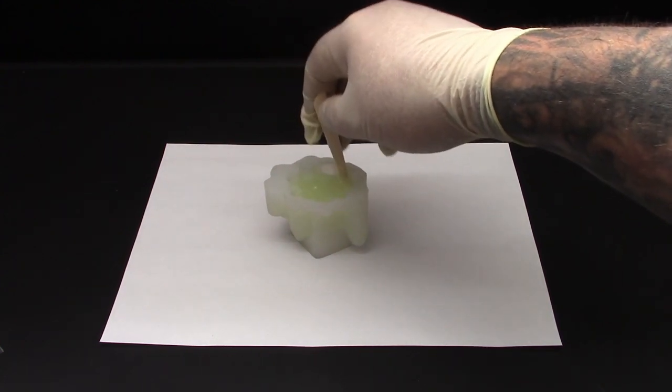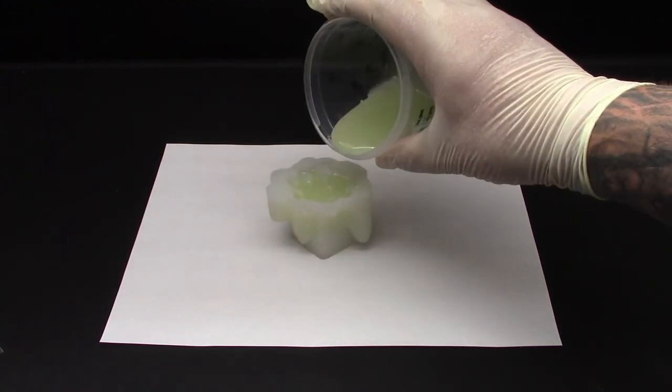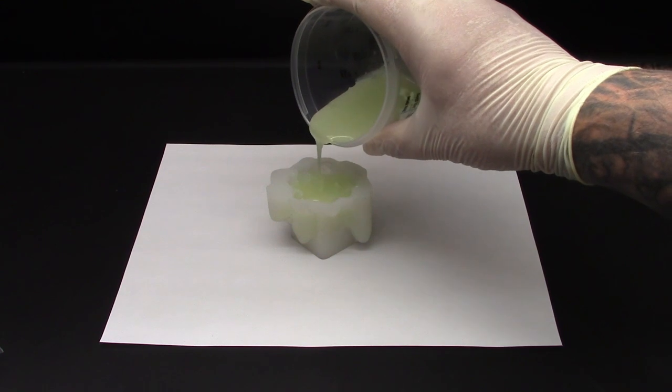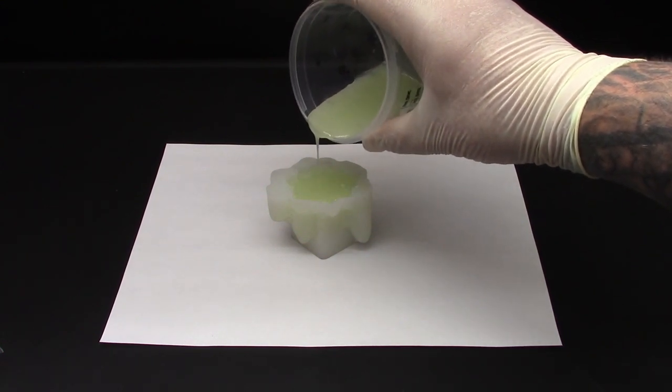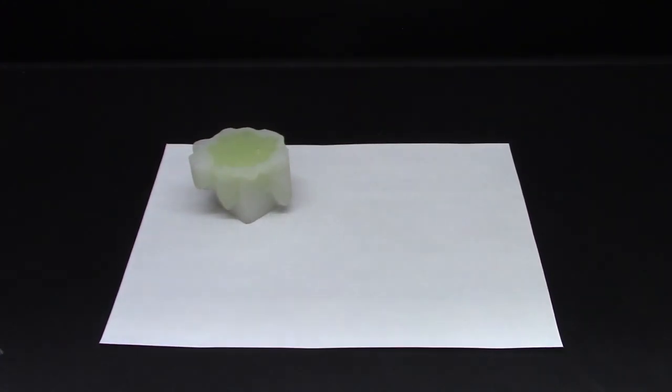For more professional level castings with no risk of tiny trapped air bubbles, you may want to use a degassing chamber to remove all air from the resin first. But we did not do that for this demo.